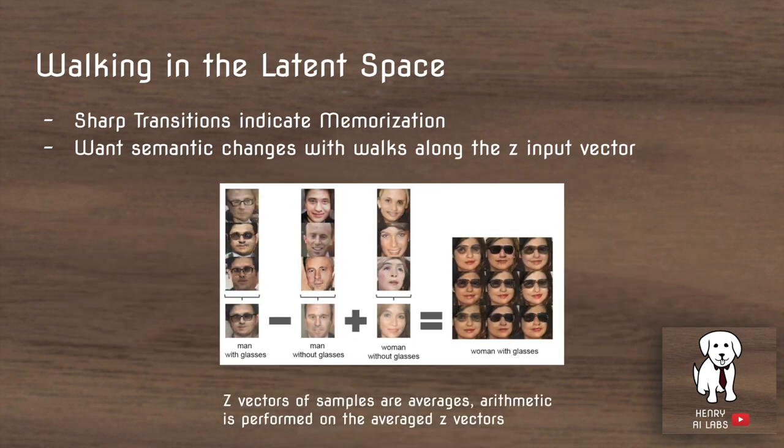Another cool idea in the DCGAN paper is walking in the latent space. The goal is to control what the GAN outputs by manipulating the input Z vector. They generate a bunch of images, record the Z vectors that produce them, average those Z vectors together, and then perform vector addition with the input representations — these randomly sampled input vectors.